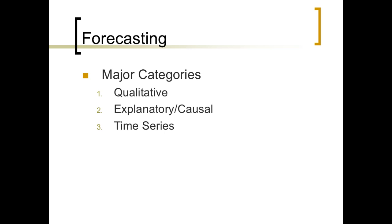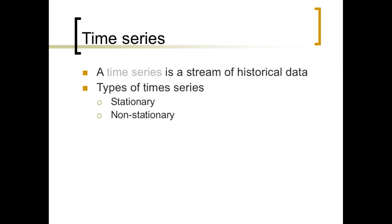The second major category is what's known as explanatory or causal. An example of this might be: it's been a very cold winter, and so therefore that's going to cause the prices of heating oil to increase. And then the last category is time series, and that's what we're going to be focusing on in this video.